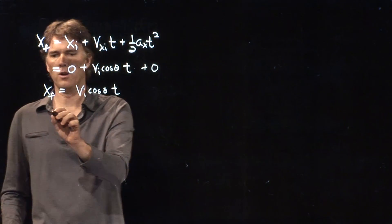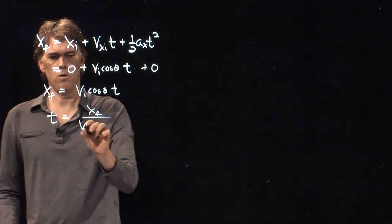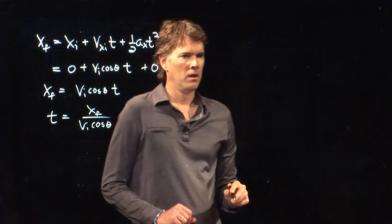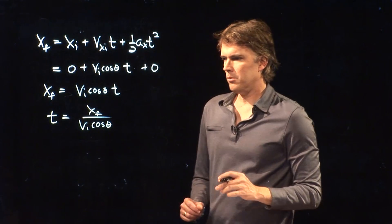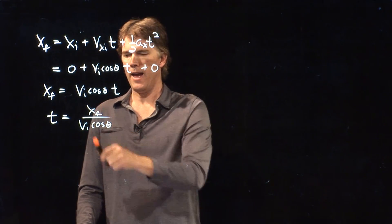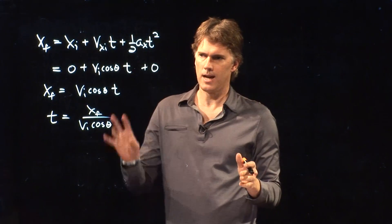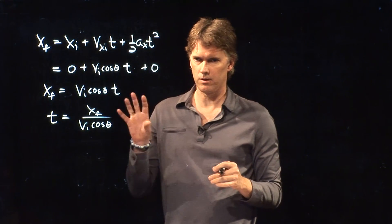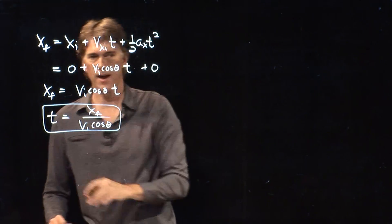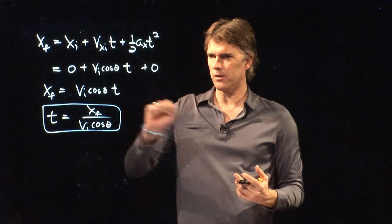And so we get xf is equal to vi cosine theta times t. And so we could solve this for t. t is xf over vi cosine theta. So if you know how far the thing went, and you also know its initial speed and its initial angle, you can immediately calculate how long it's in the air. This is one way to do it. You, in fact, don't know anything about the height. But you don't have to know anything about the height if you have all these other parameters.